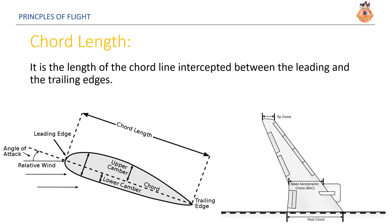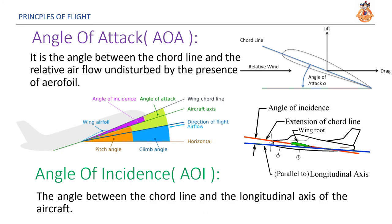Cord length. It is the length of the cord line intercepted between the leading and the trailing edges. Angle of attack. It is the angle between the cord line and the relative airflow undisturbed by the presence of an aerofoil. Angle of incidence. The angle between the cord line and the longitudinal axis of the aircraft is called the angle of incidence.